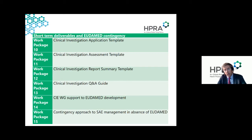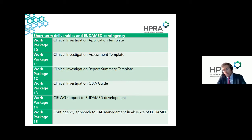Work package 13 concerns a questions and answers guidance document we've been working on for about a year at the CIE working group. It wasn't part of the previous work program so we've now given it a formal number. The work is reasonably mature — there are about 20 questions and answers being worked on — and we'll hopefully push that out in the early part of next year.